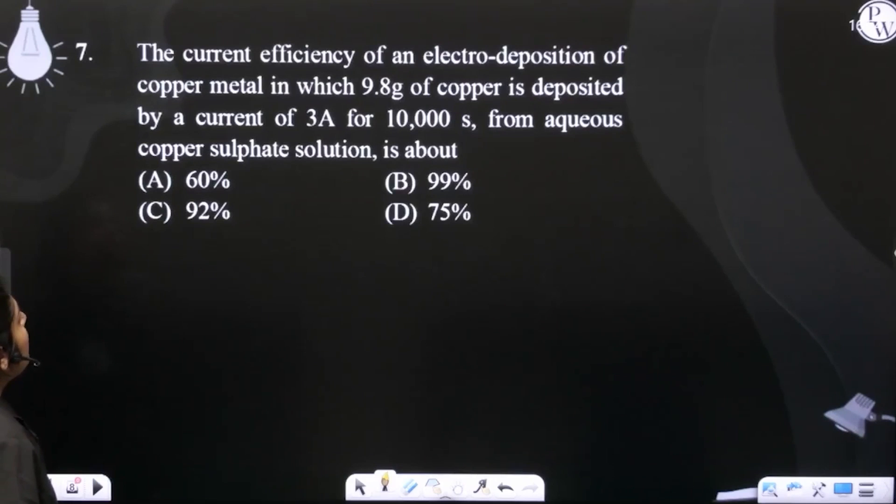Okay. What do we do? Copper sulphate solution. The current passed is 3 amperes for 10,000 seconds. So, how much copper is deposited? 9.8 grams. Now, you can ask how much efficiency of this whole process was. The current efficiency is basically asking.